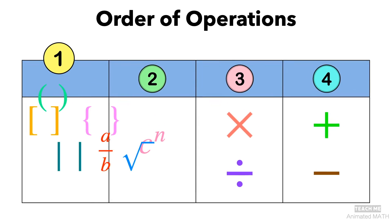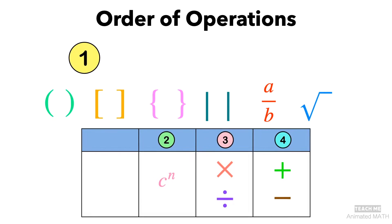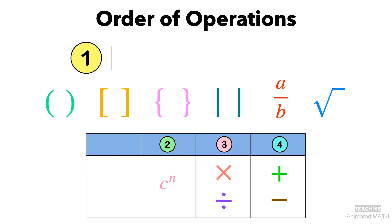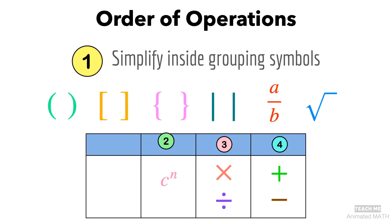First, we check the expression for any grouping symbols. These include parentheses, brackets, braces, absolute value lines, fraction bars, radicals, or other grouping symbols.